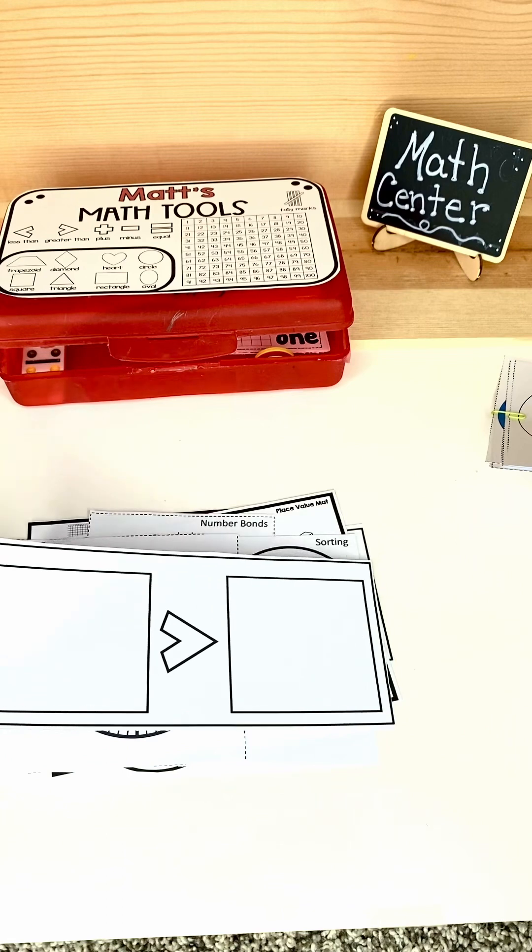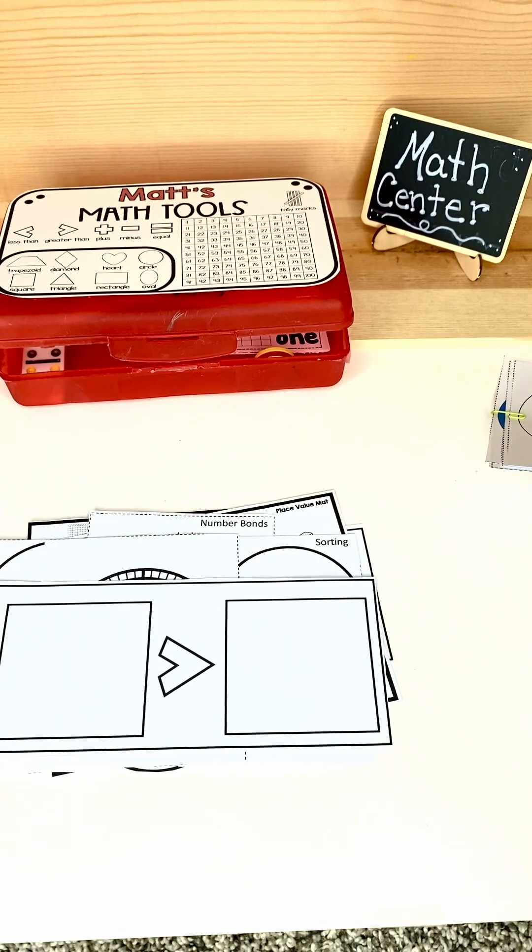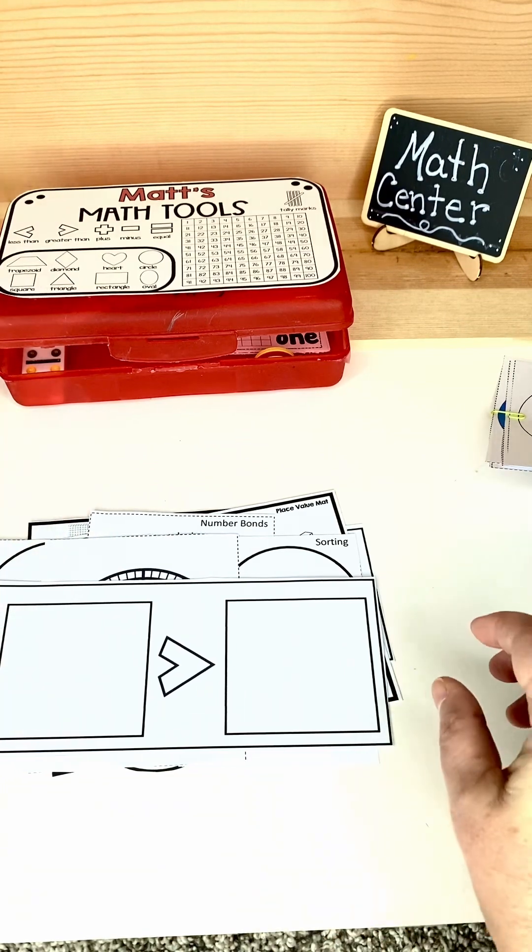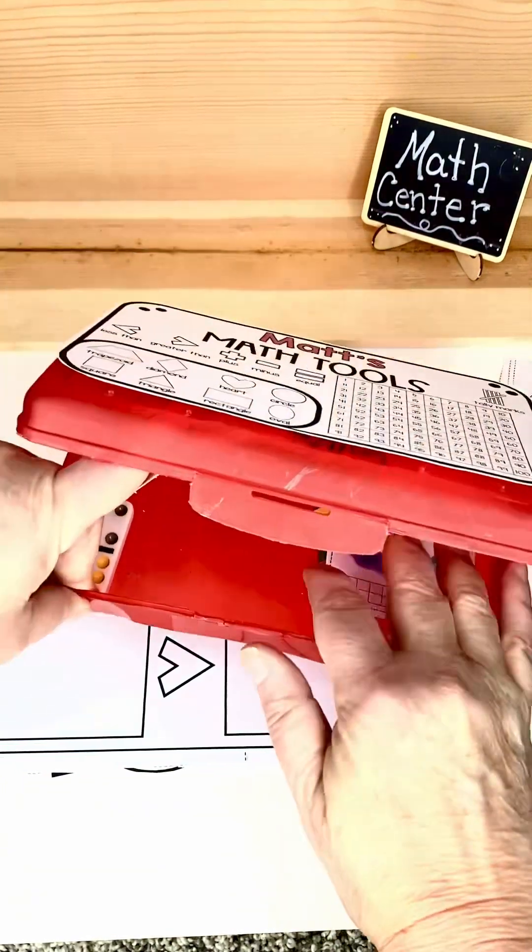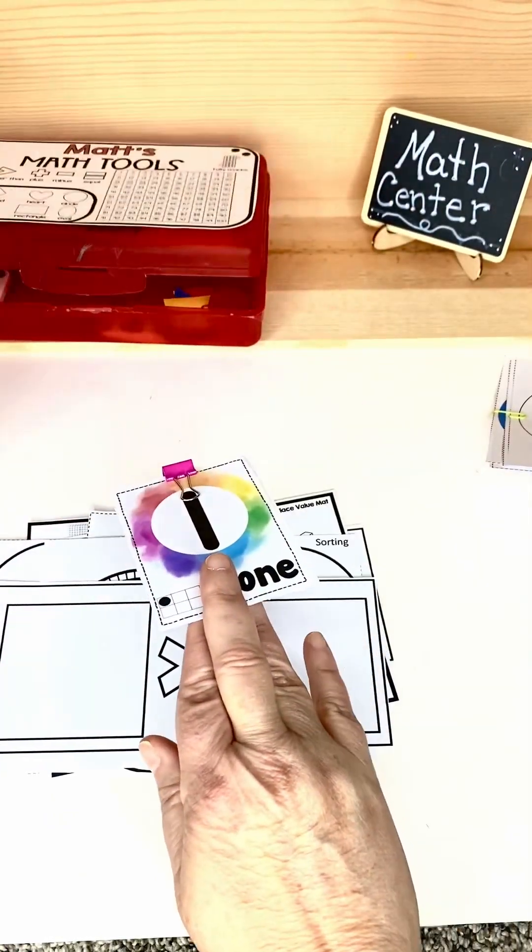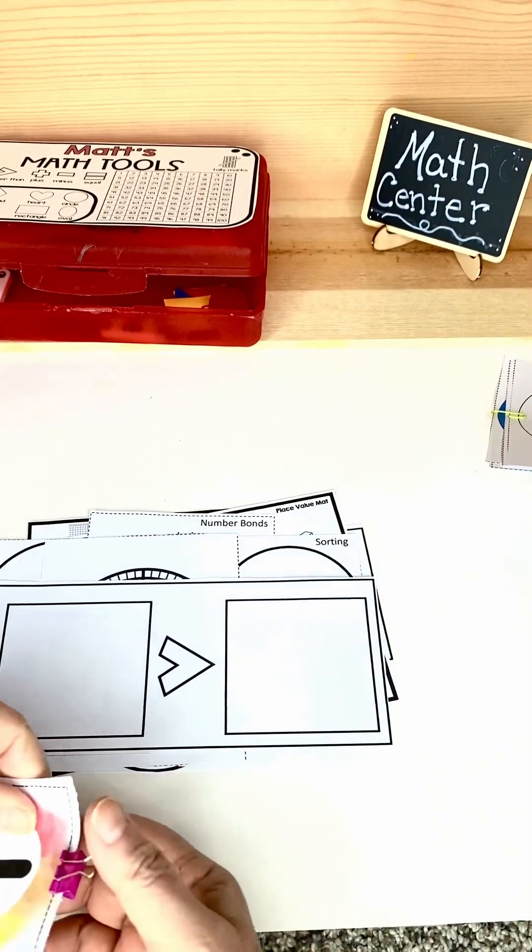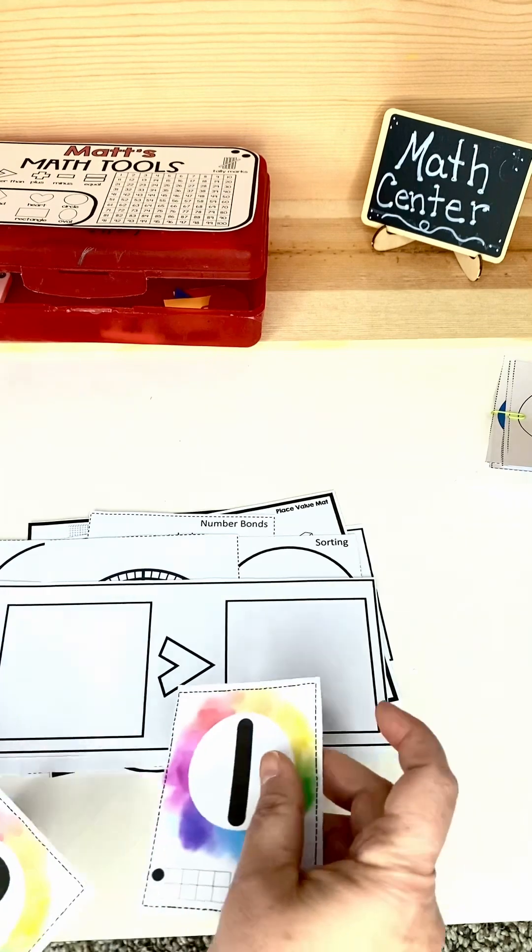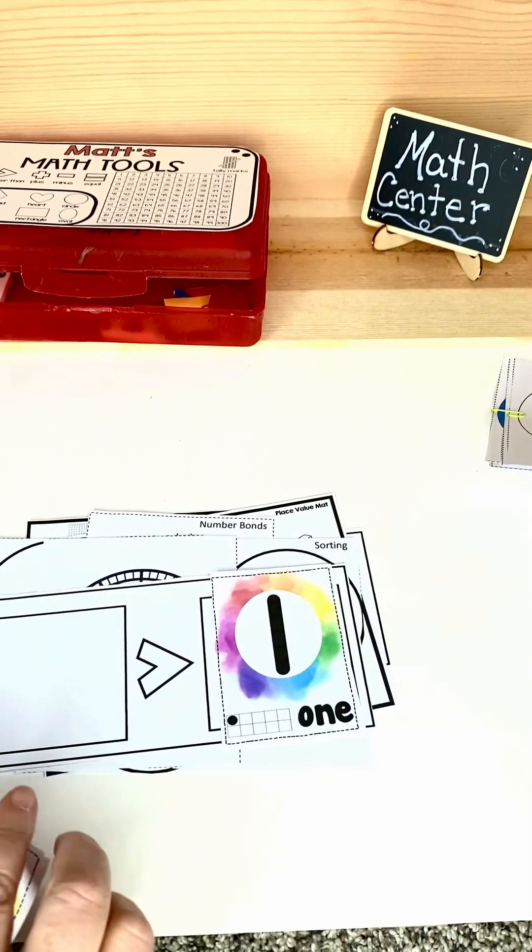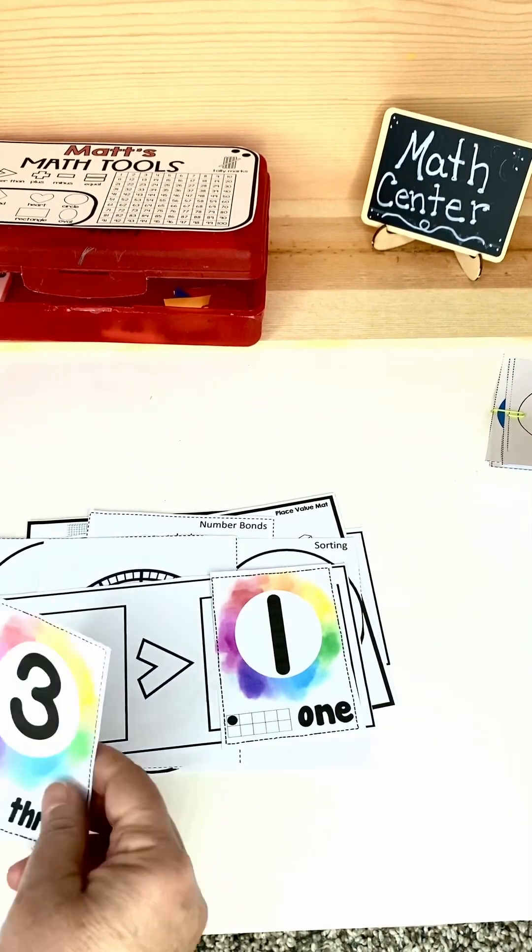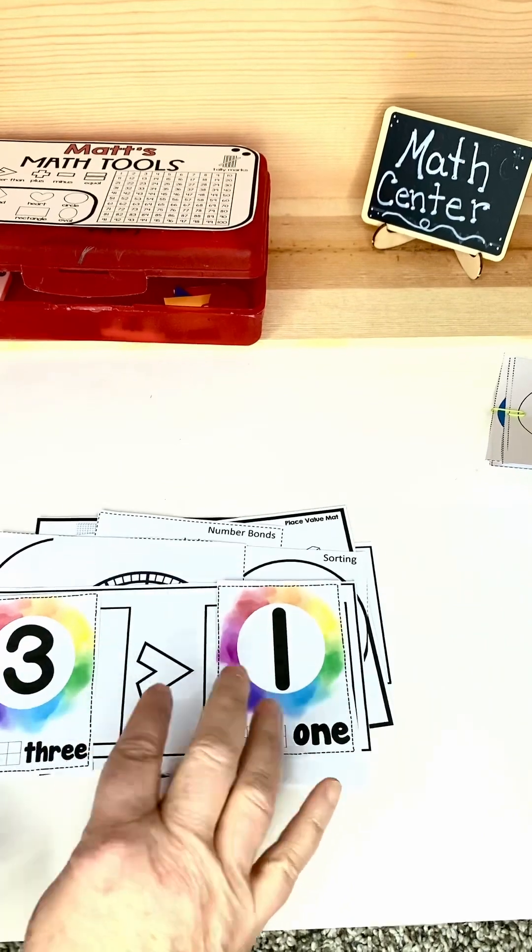And then this is a greater than less than. They can put a number here. If they wanted to, they could use the number cards in here that are provided and they could put one and three. So three is greater than one.